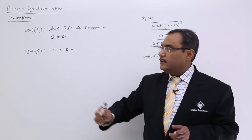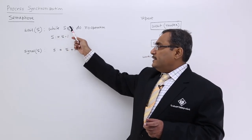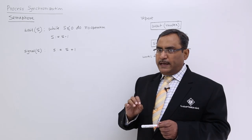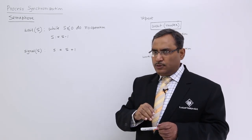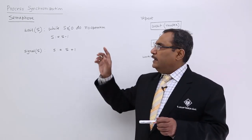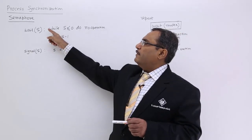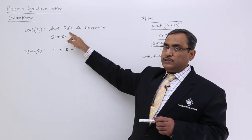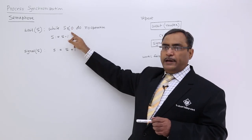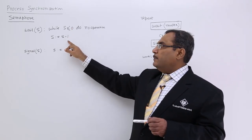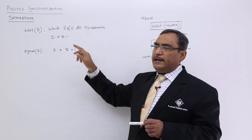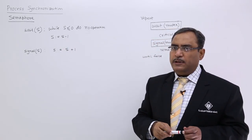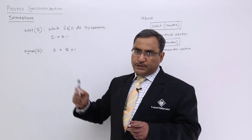Let me explain again: while S is less than or equal to 0, do no operation. Whenever the value of S is 0 or less, it will go into infinite looping until S becomes non-zero positive. When it becomes non-zero positive, it executes S = S − 1 as the next instruction on the semaphore variable S in the wait operation.